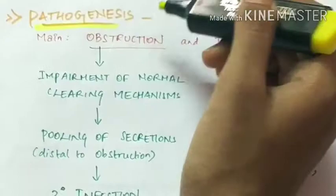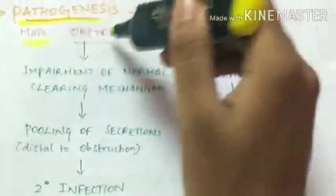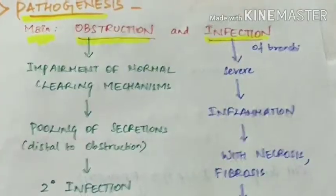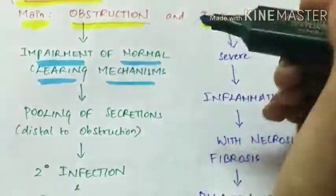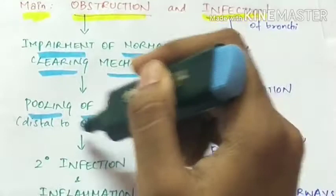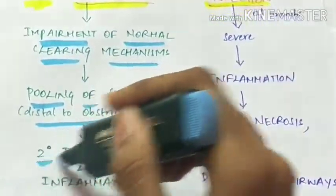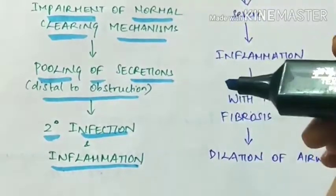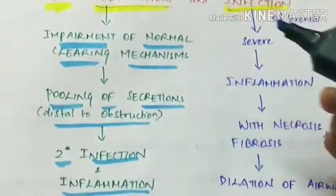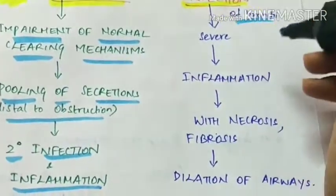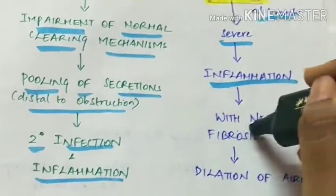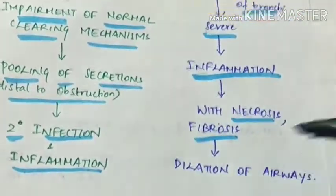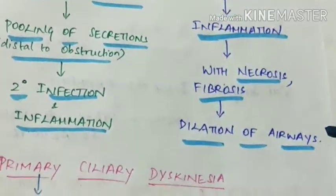Pathogenesis of bronchiectasis: the main causes are obstruction and infection. Obstruction causes impairment of normal clearing mechanisms, so there is pooling of secretions distal to the obstruction, which leads to secondary infection and inflammation. When infection is severe, it leads to inflammation with necrosis and fibrosis, resulting in dilation of the airway.